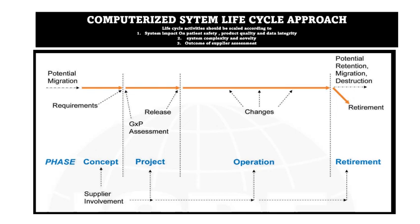The life cycle approach for computerized systems includes four major phases. The first is the concept phase, where you evaluate the requirements of the computerized system based on business needs. The second is the project phase, where we validate the computerized system and after validation the system is released for routine use.